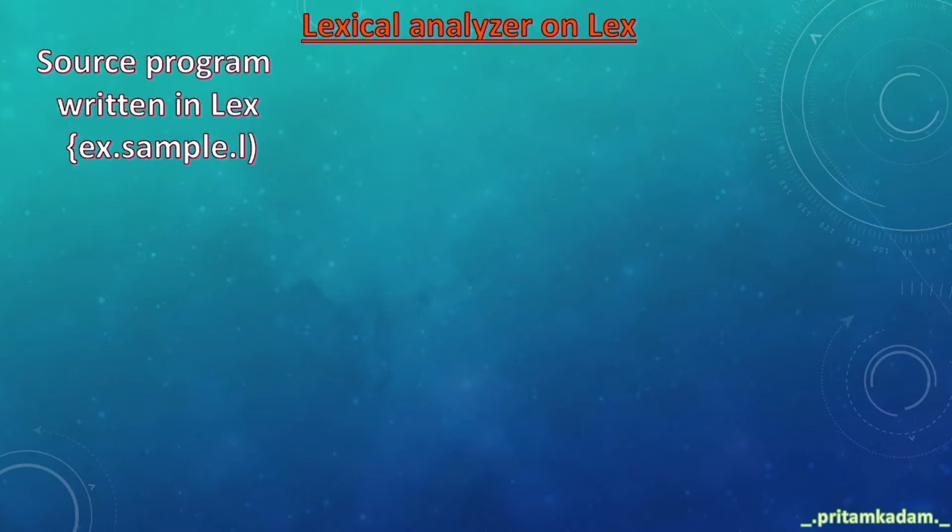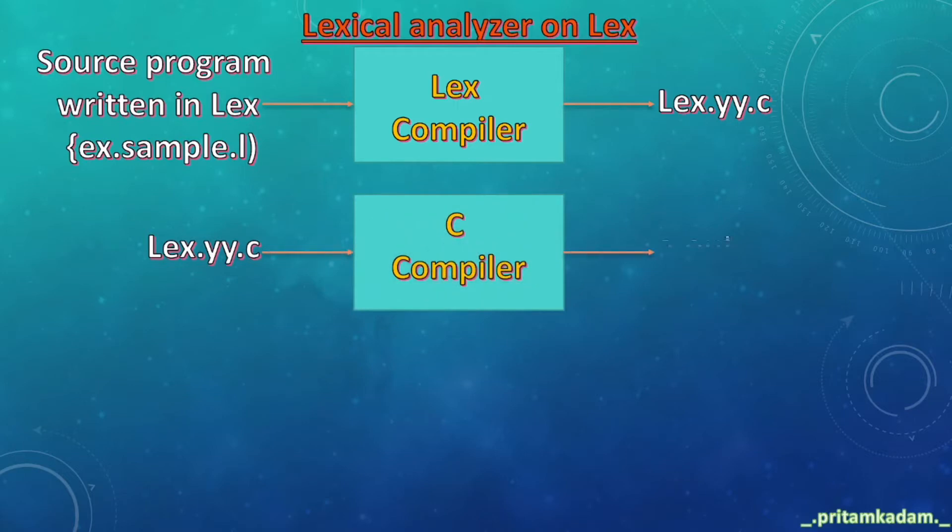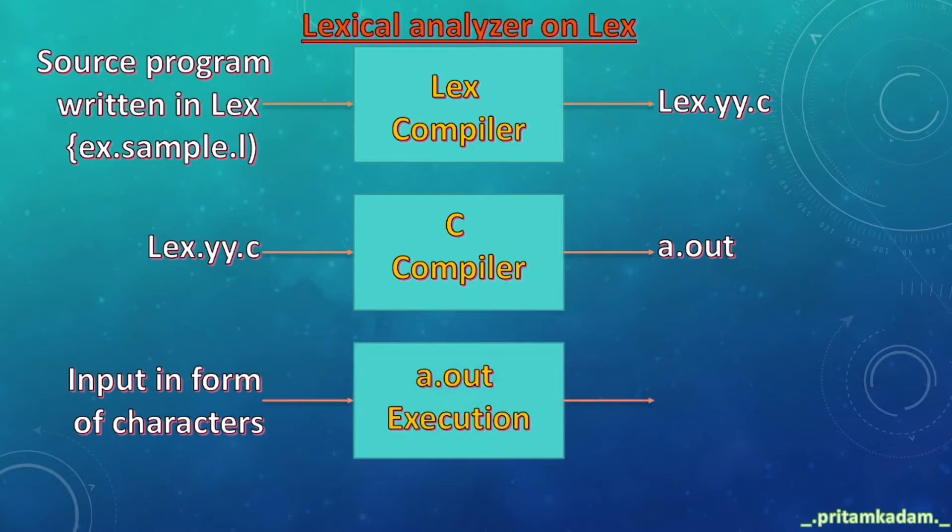Lexical analyzer or lex source code is written in lex. For example, if the program's name is sample, then its extension will be .l. Then it is given to the lex compiler and we get the output as lex.yy.c. Now we have to give this file to the C compiler, and from a.out we will get the output. Input in form of characters is given to a.out execution and we get tokens as output.